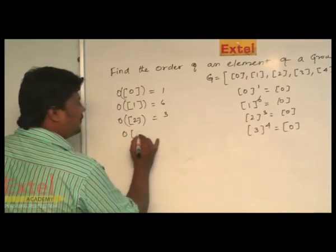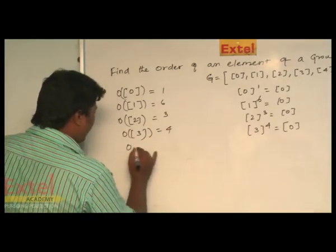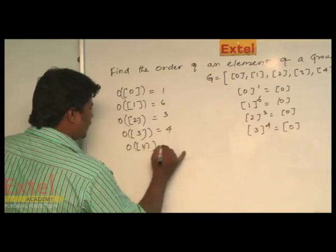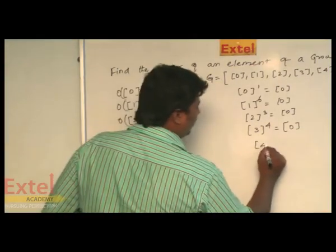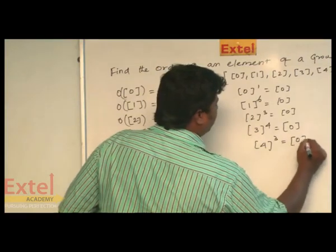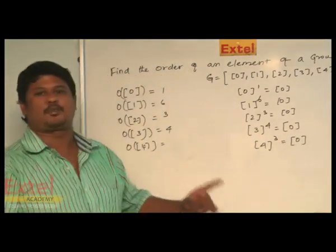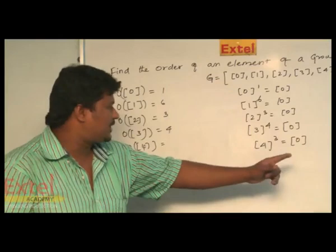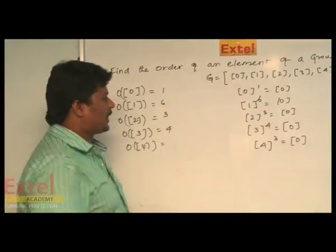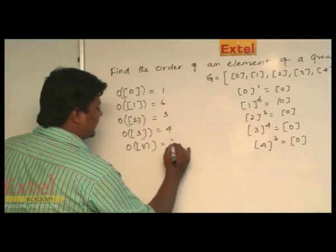The order of 3 is equal to 4. Then for order of 4: 4 power 3, which equals the identity element, because 4 plus 4 plus 4 equals 12, and the remainder of 12 divided by 6 is 0. Therefore, that is the identity element, so the order of 4 is 3.